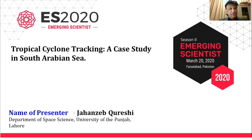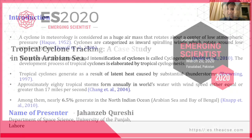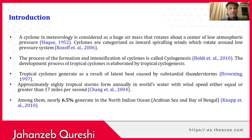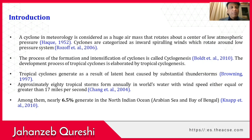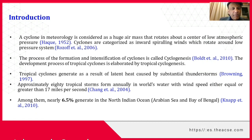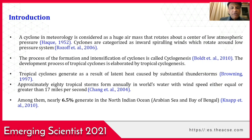The topic of my presentation is Tropical Cyclone Tracking, a case study in the Southern Arabian Sea. A cyclone in meteorology is considered as a huge air mass that rotates about the center of low atmospheric pressure. Cyclones are characterized as inward spiraling winds that rotate around a low pressure system. The process of formation and intensification of a cyclone is known as cyclogenesis.